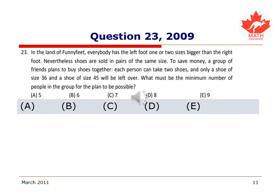We've arrived at our last question for today, question 23 from the 2009 test. In the land of funny feet, everyone has the left foot one size or two sizes bigger than the right foot. Nevertheless, shoes are sold in pairs of the same size. To save money, a group of friends plans to buy shoes together. Each person can take two shoes and only a shoe of size 36 and size 45 will be left over. What must be the minimum number of people in the group for the plan to be possible?